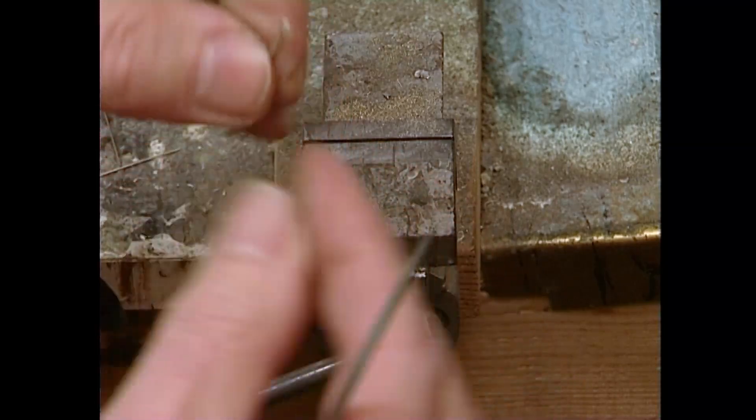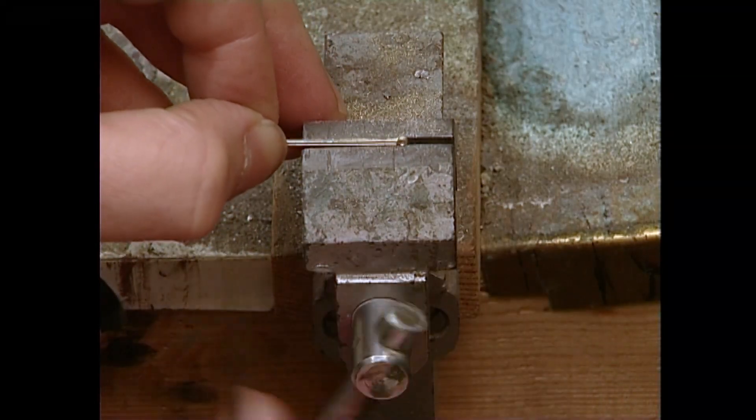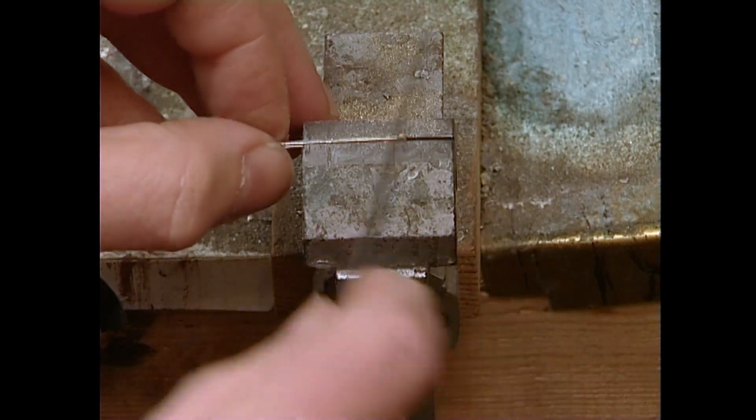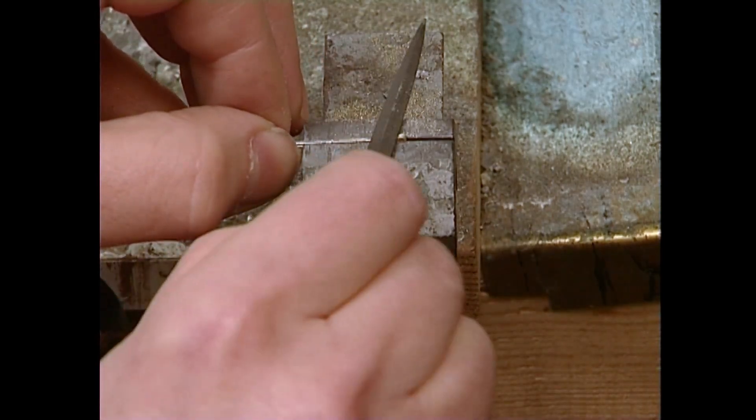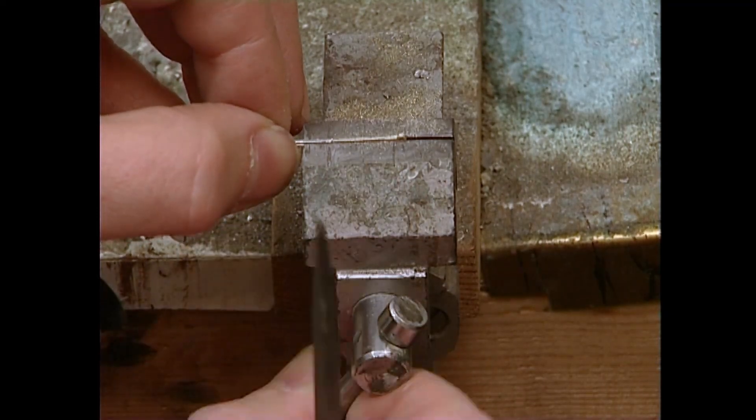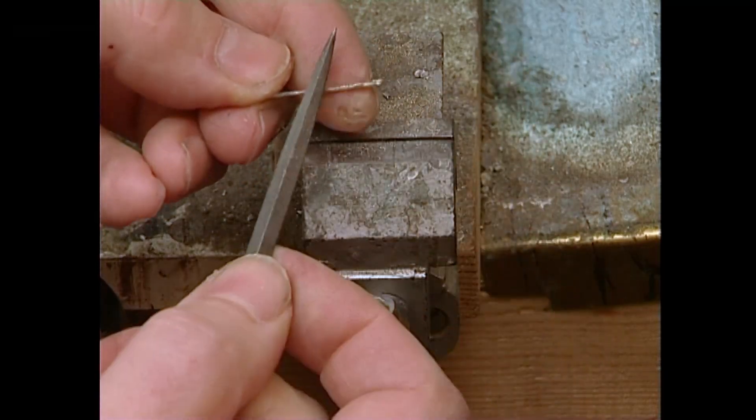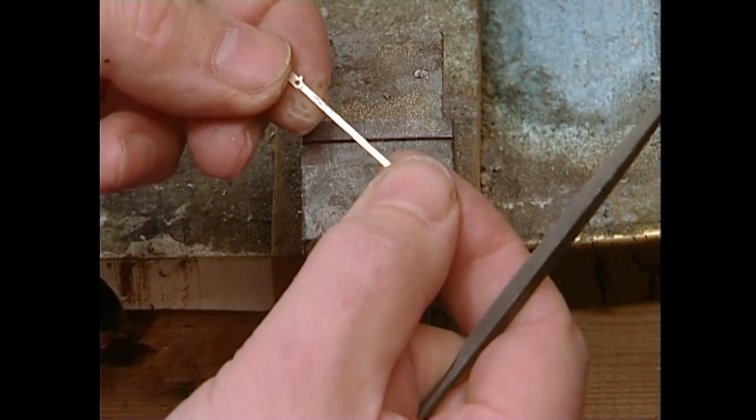And so on then. Turn round. Do the same again. It neatens up the joint. A little bit more to do there. And a little bit to take off the back.